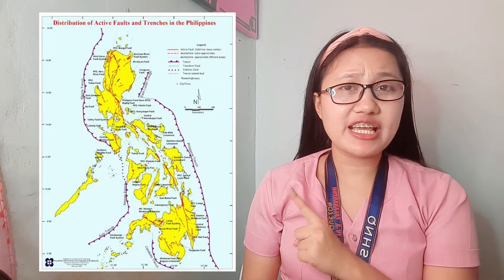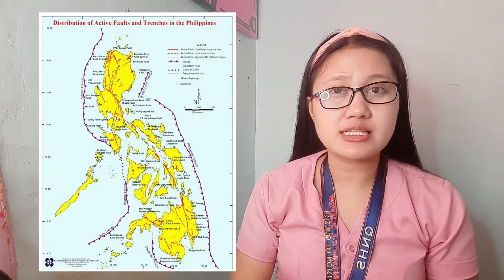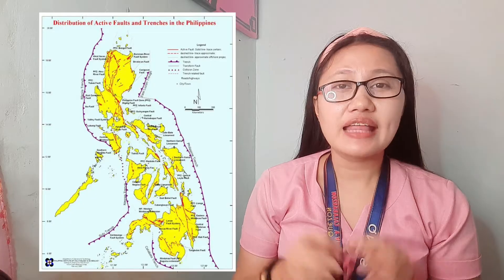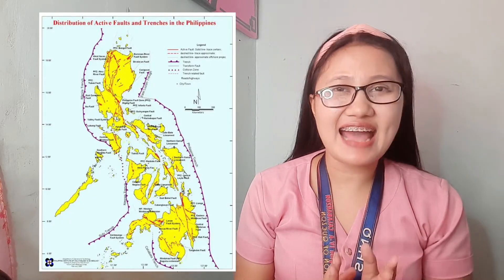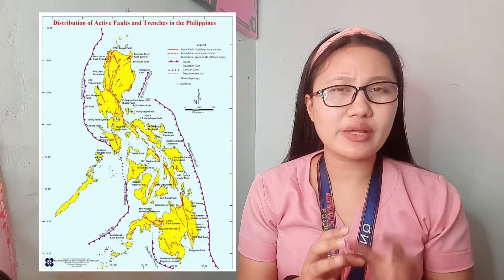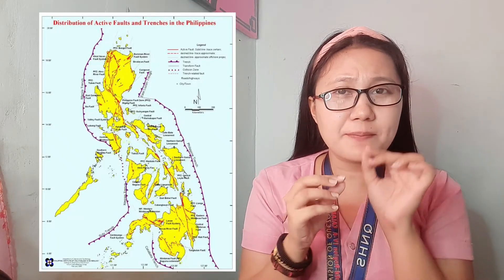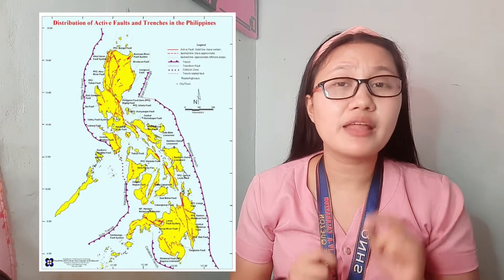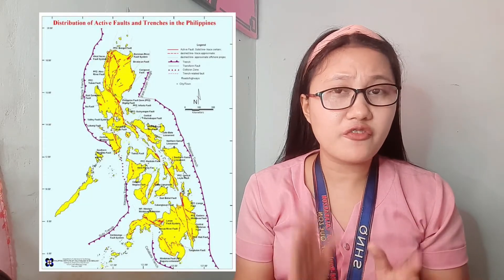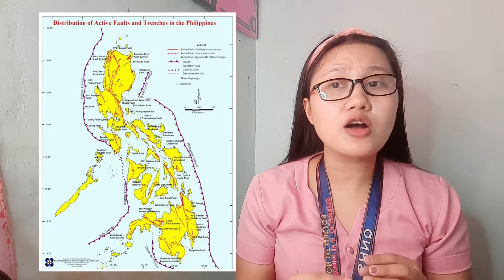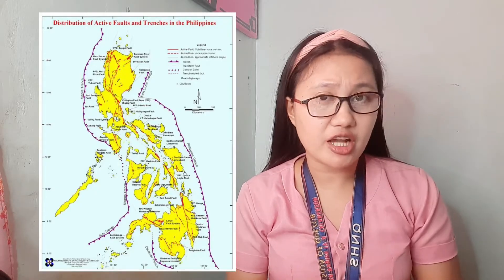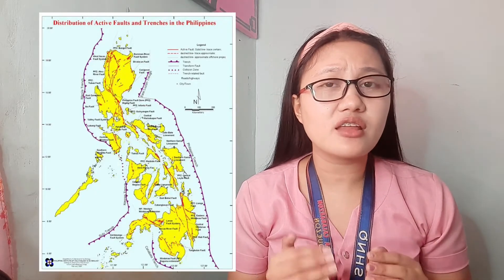This picture shows the fault lines in the Philippines. Whenever an earthquake occurs, we can presume that there is movement along the plates in the fault line areas. Earthquakes affect the edges of the tectonic plates along the fault lines. A fault is a crack in the lithosphere caused by the stresses created as sections of plates move in different directions.